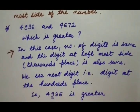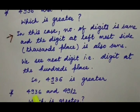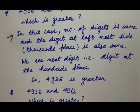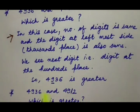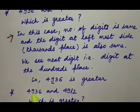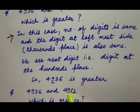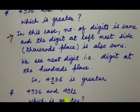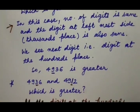One more example: 4936 and 4912. Which is greater? In both numbers, the number of digits is the same. The thousands place digit is also the same — here is 4, here is 4. The hundreds place digit is also the same — here is 9, here is 9. So we look at the digit at the tens place: here is 3 and here is 1. Since 3 is greater than 1, we can say that 4936 is greater.